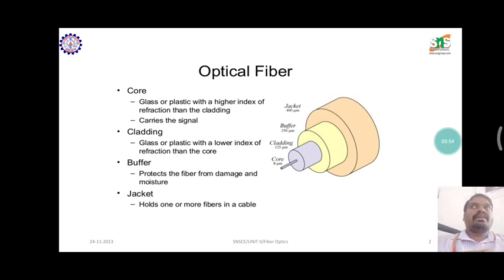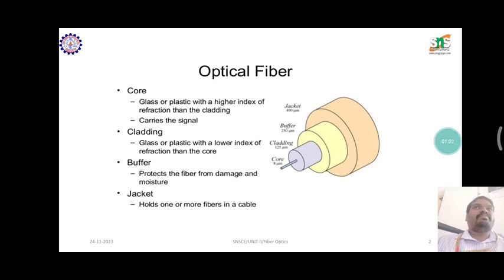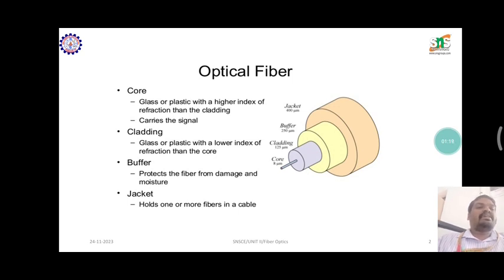The jacket material is a 400 micrometer range material. The core and cladding materials are involved in higher refractive index functions — they handle refraction and reflection. The buffer and jacket materials serve as protective materials in the cable. The core and cladding are made of two different types of materials.